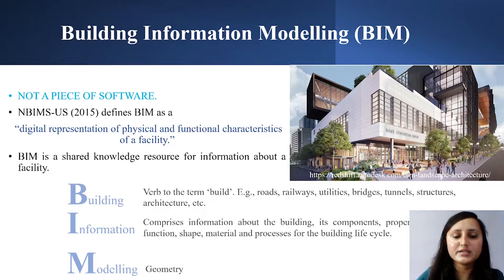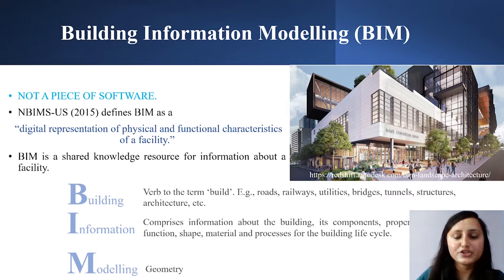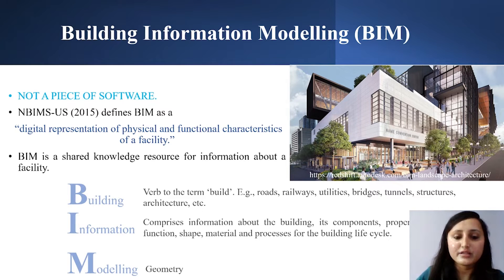The second word is Information. We can say it is the heart of BIM as the real value lies in information. It comprises information about the building, its components, properties such as function, shape, material, and processes for the building life cycle. The third word is Modeling. It refers to the geometry of the building. BIM uses various sources for the modeling part.